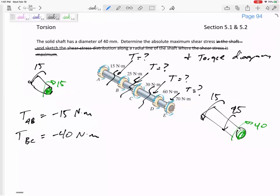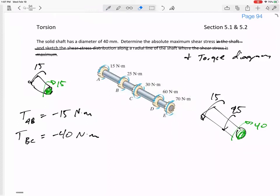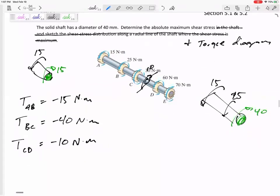And then do the same thing over here. If I've got right here, I've got 15 and 25 coming over this way, but then I've got 30 that counteracts it, but I still need another 10, right? So the torque inside section CD is negative 10 Newton meters.